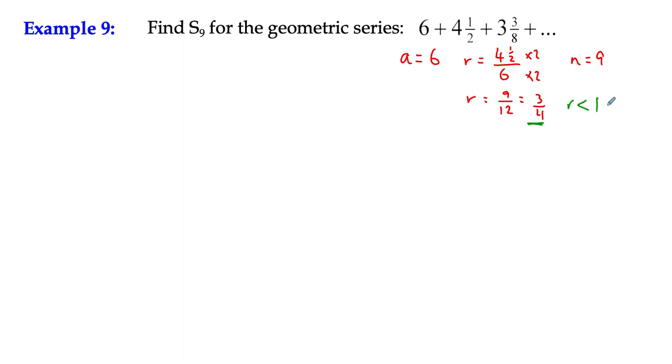So we can use the form of the formula that's less than 1. So we can say that the sum to the first 9 terms, well, let's write it down as a general rule first. sn, sum to n terms is a times, now r is less than 1, which means I'm going to use the one that's going to have a 1 first. So it's 1 minus r to the n over 1 minus r. So we want, for s9,